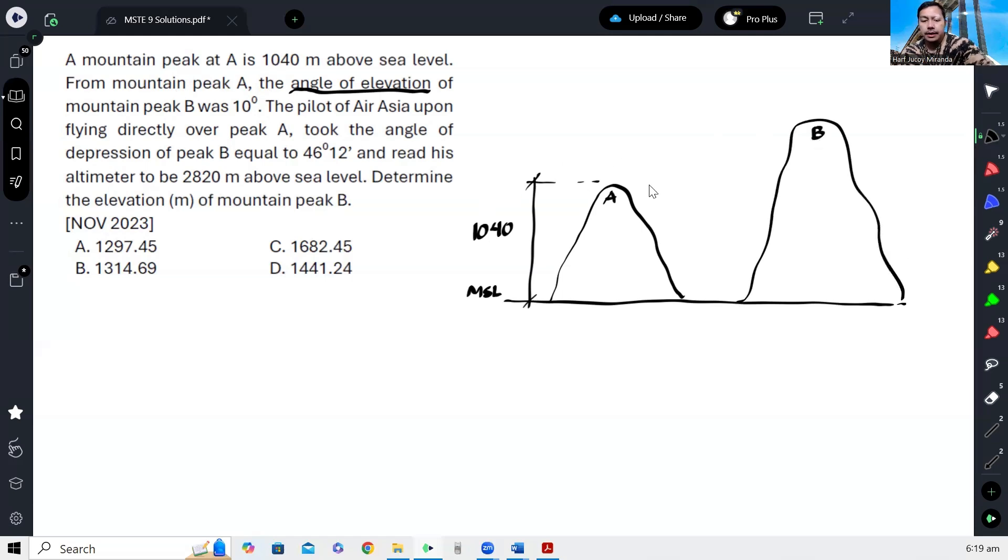Okay, and measured from A, it has an angle of elevation of 10 degrees. And then there's a pilot. So that means there's an airplane above A. So the airplane is here.